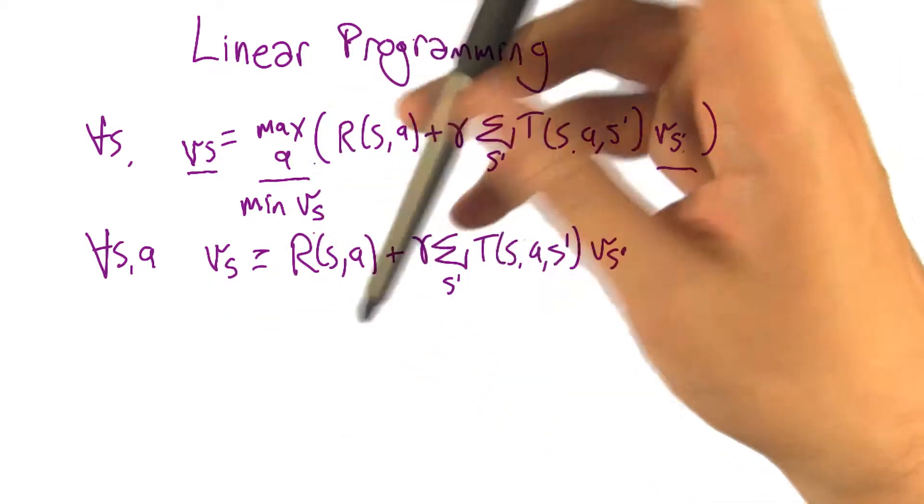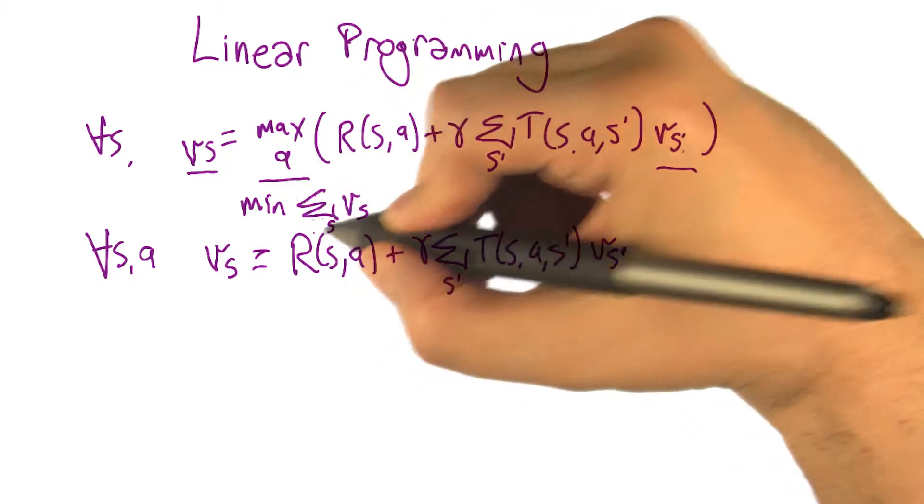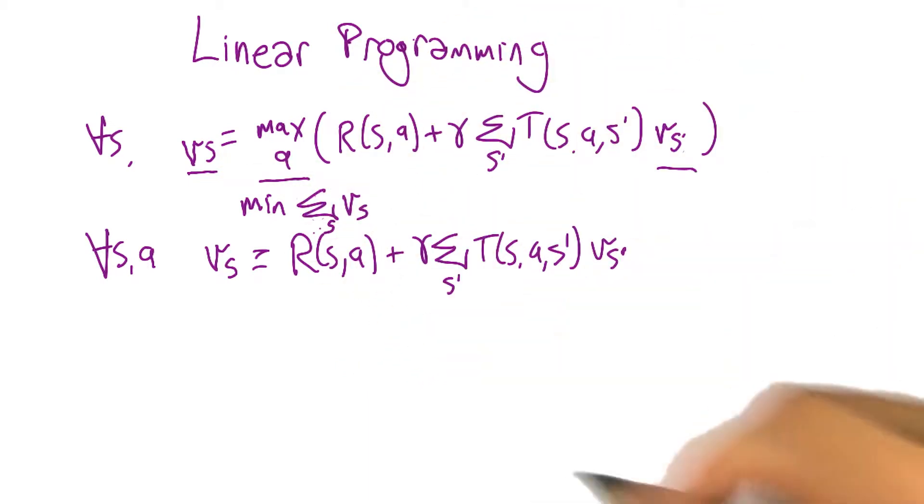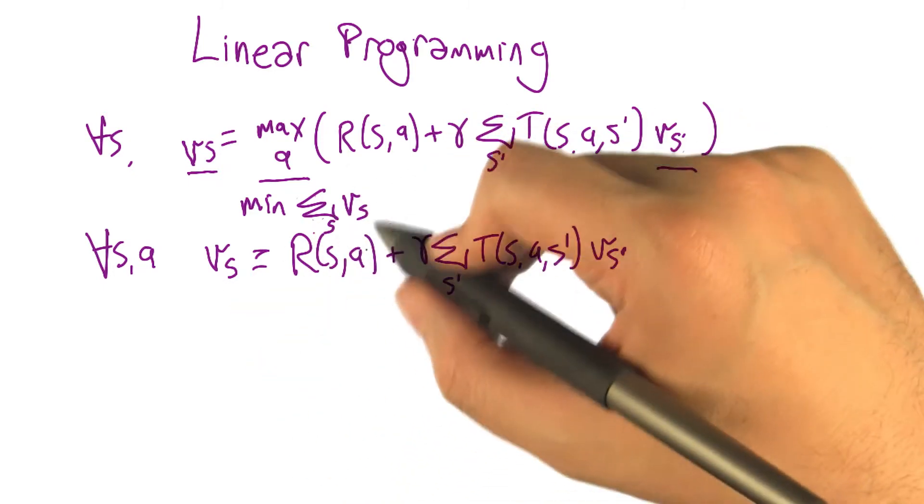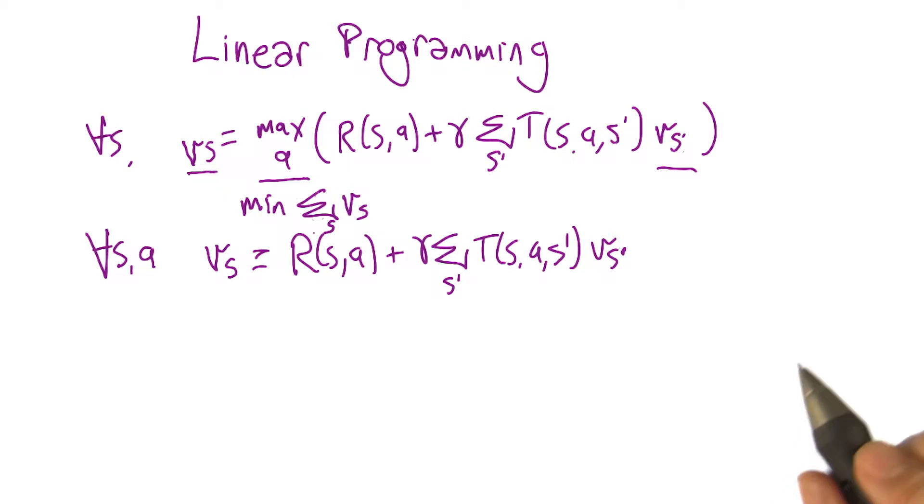So we kind of want to minimize all of them somehow. So the way we're going to write that, and this turns out to work, is minimize the sum. So that's going to put pressure on all the individual Vs to be as small as they can be so that it actually equals the max, isn't just an upper bound on the max. Right, because if any one of them isn't, then you don't have the minimum sum. Right, then you can always move it down a little bit.